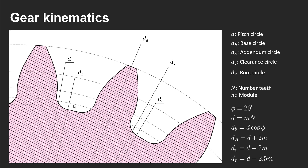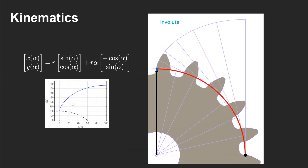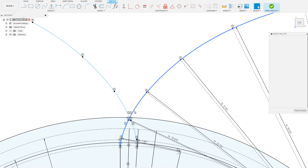Most tutorials I find online generate the involute by approximating the geometry using either an arc or a spline which fits a set of points. These points can be generated by a sort of imaginary rope which you tie on one end to the base circle, then tighten and unwind, which generates the involute. You could fit a spline to this.